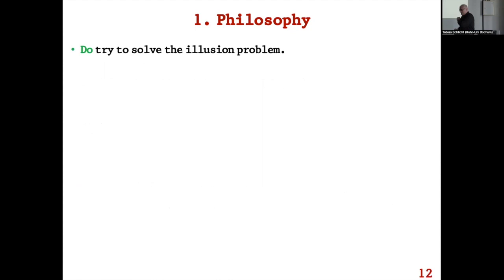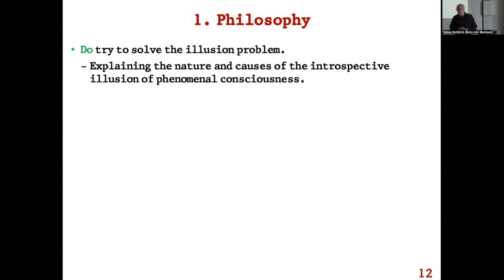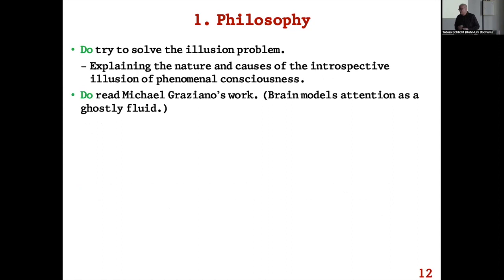Do try to solve the illusion problem — explaining why so many people believe, or are tempted to believe, in phenomenal realism. Explain the nature and causes of the introspective illusion of phenomenal consciousness. Do read Michael Graziano's work — great work about how the brain models attention. The brain has systems that monitor attention and model it as something like a ghostly fluid that emanates from the eyes and latches onto things, and this modeling leads us into all kinds of dualistic beliefs about the mind.